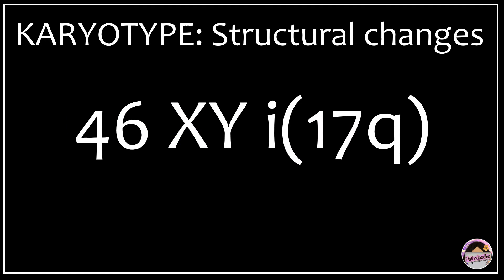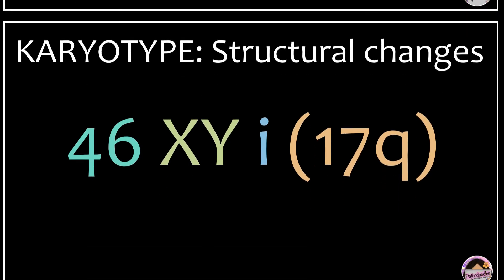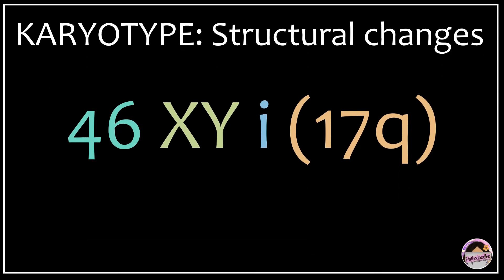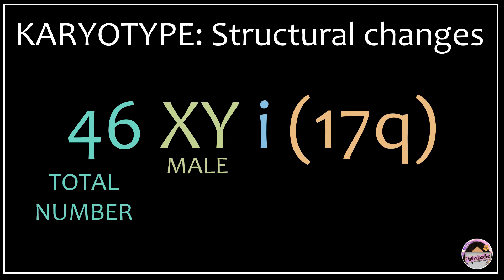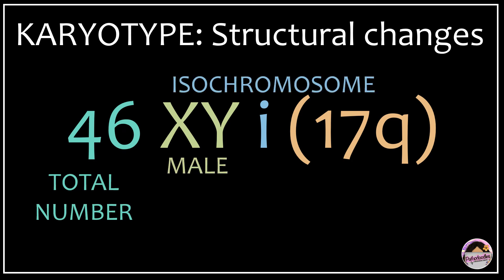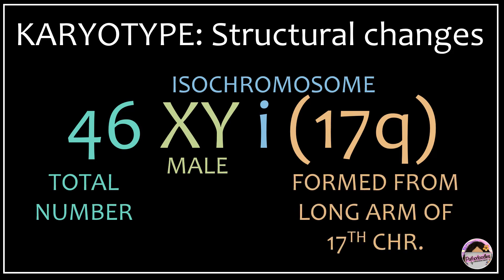Next: 46,XY,i(17q). 46 tells you the total number of chromosomes; XY indicates a male patient; and an isochromosome has been formed from the long arms — q — of the 17th chromosome.